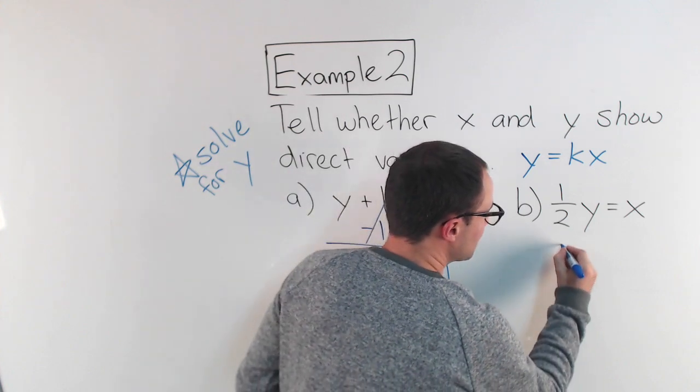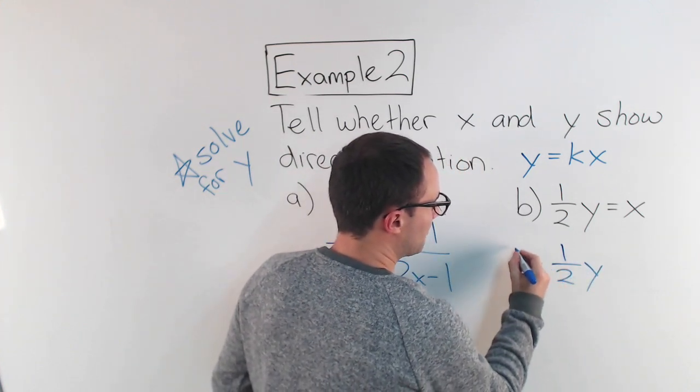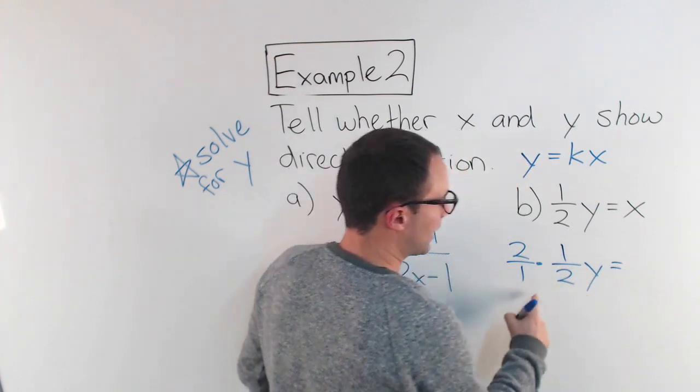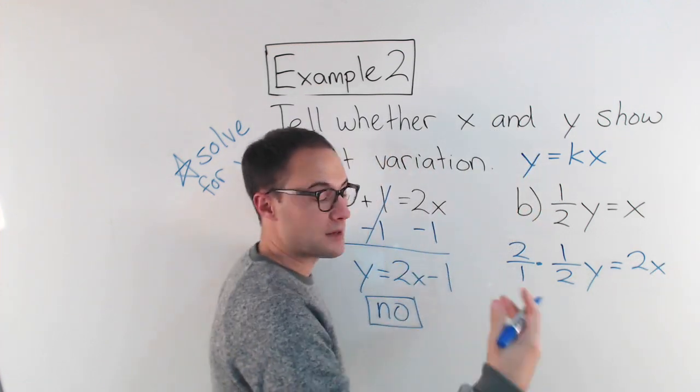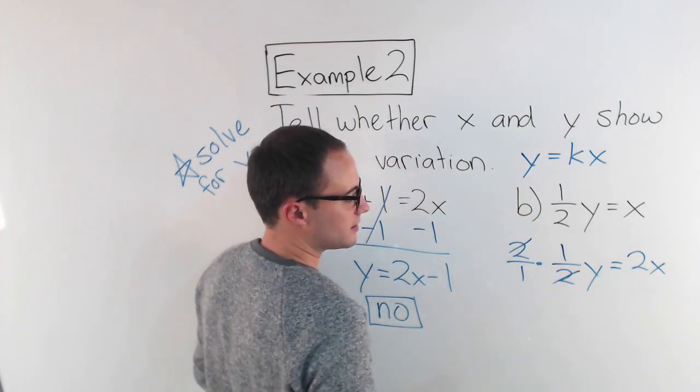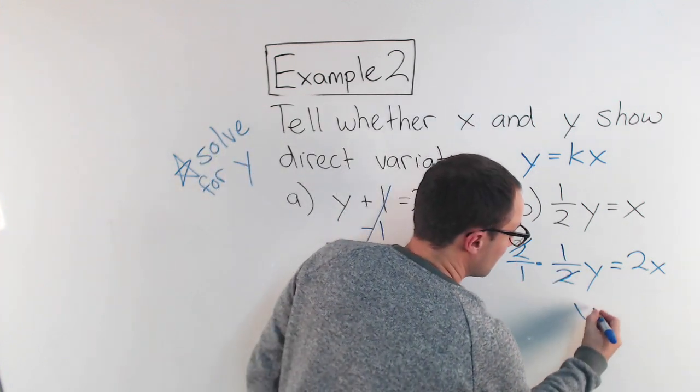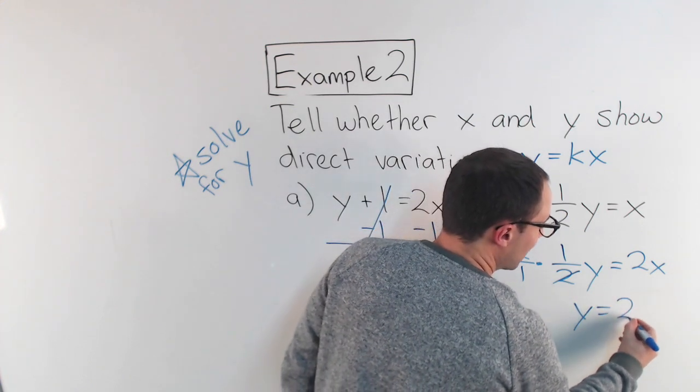So to solve, I'm just going to do, I've got 1 half y. I'm going to multiply by 2 over 1. Anything I do to one side, I have to do the other. So that's going to become 2x, 2 times x. And this works because, right, the 2s will cancel each other out. And I basically get 1y, which is just y, which is great, all by itself, which is what I want, equals 2x.